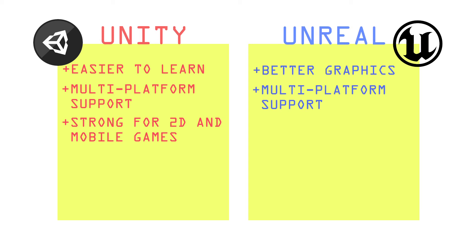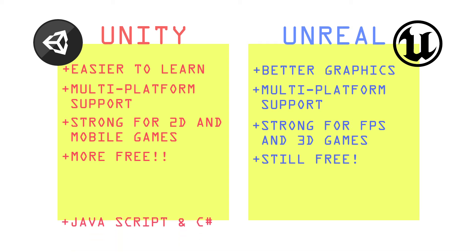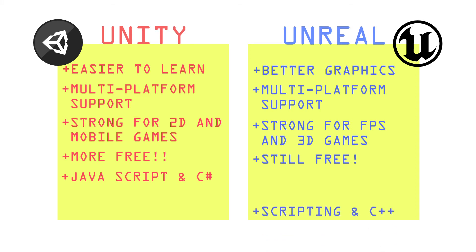But Unreal Engine can 360 no-scope you with the advantage in FPS and three-dimensional games. Both are free, so don't go off and try to torrent one of these engines. In Unity you'll use C# or JavaScript, while in Unreal it's C++ or Blueprint visual scripting — apparently you don't have to write code there, just click code.